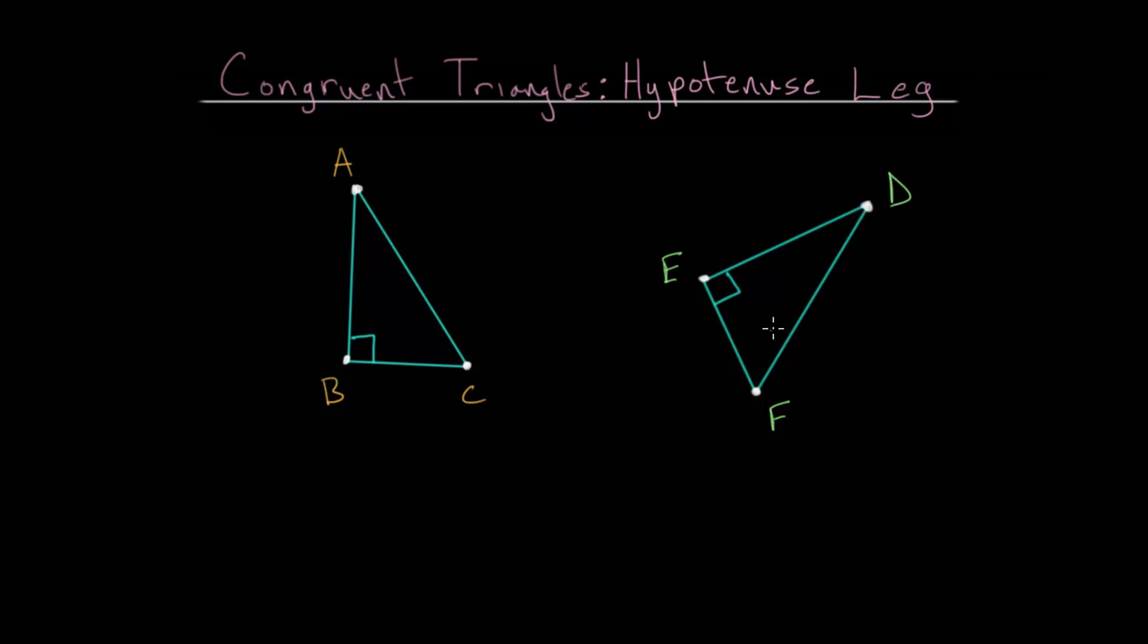This relationship basically states that if you have two triangles, and they are right triangles, and you know that the hypotenuse in each triangle is the same length, and you know that one of the legs in the right triangle is correspondingly equal,